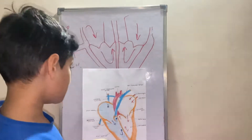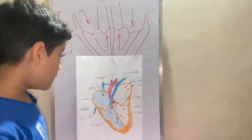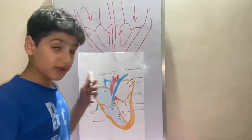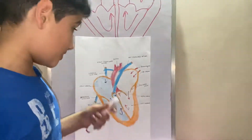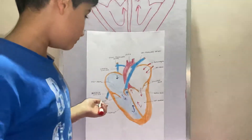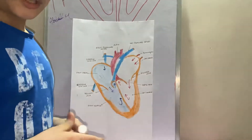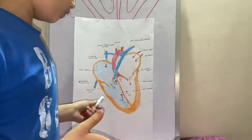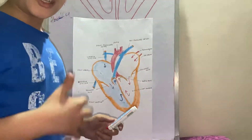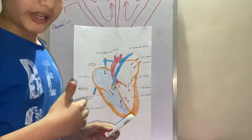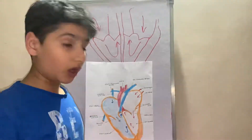So let's talk about the heart. The heart is a hollow muscular organ that pumps the blood. It is a pumping organ which is situated in the thoracic region, in between the two lungs.